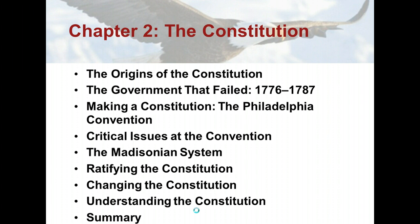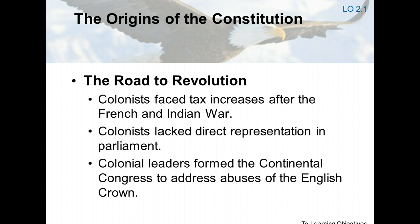A Constitution is a nation's basic law. It creates political institutions, allocates power within government, and often provides guarantees to citizens. Constitutions establish who has power in society and how that power is exercised. This chapter examines the background of the Constitution and shows that the main principle regarding the writing of the Constitution was a concern for limited government and self-determination.